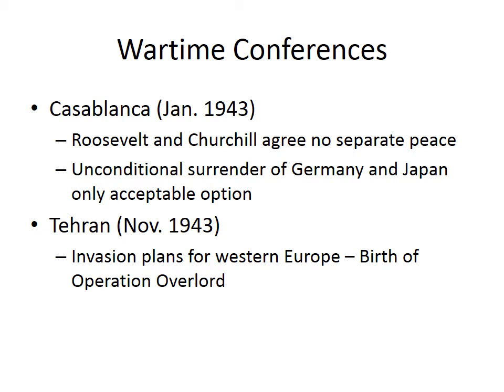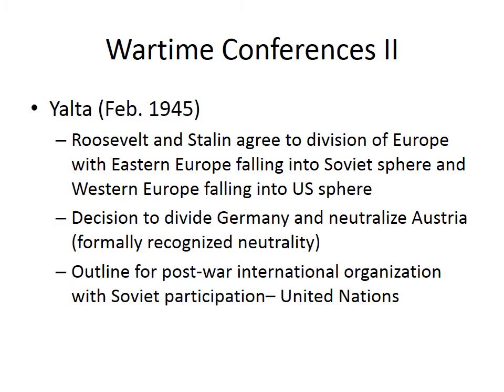Following Casablanca was the Tehran Conference, where they hashed out Operation Overlord. Then the more famous Yalta Conference in February 1945, where the Allies essentially agreed to divide up Europe — though this wouldn't be officially recognized by the U.S. until the 1975 Helsinki Accords. Germany would be divided in half, the western half allied to the U.S., the east becoming Soviet satellites. Austria would be officially recognized as neutralized territory.